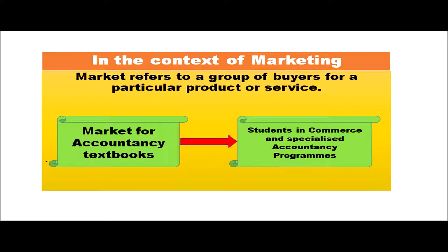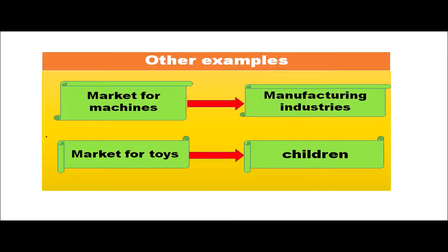For example, the market for accountancy textbooks will be students in commerce and specialized accountancy programs. The market for machines will be manufacturing industries, and the market for toys will be children. So in marketing, the word market denotes the collective buyers who are interested in the product.